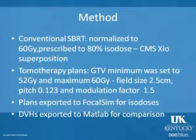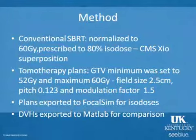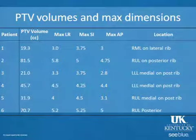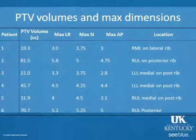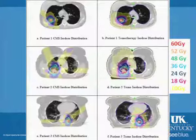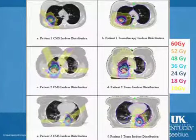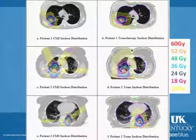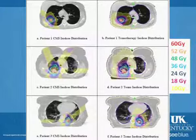The plans were exported to FocalSIM to calculate the isodoses, and the DVHs were exported to MATLAB for comparison. This table shows the volume of the tumors, their maximum dimensions, and their locations. On the right, you can see the tomotherapy isodose distributions, and on the left, the conventional LINAC isodose distributions.